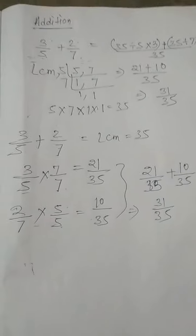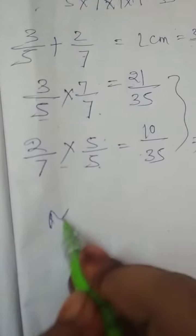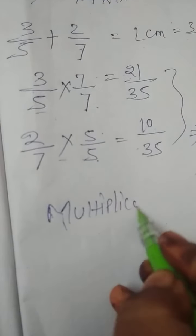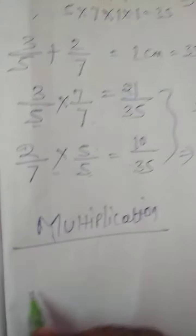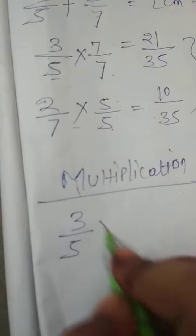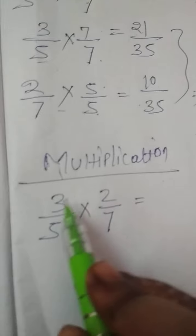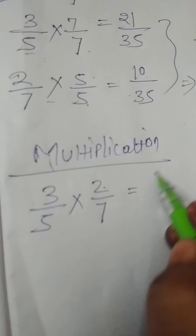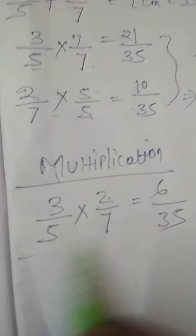We will go for the next, that is multiplication. Multiplication is so much easy! Look at here: 3 by 5 into 2 by 7 is given. What we have to do — just multiply the upper side: 3 into 2 is 6. Then multiply the lower side: 5 into 7 is 35.